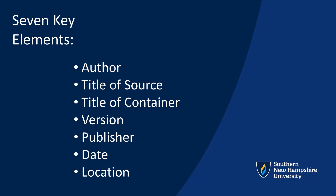Next, you will want to include the title of the source and the title of the container. For the title of the source, you should describe what was generated by the AI tool. This may involve including information about the prompt and the title of source element if you have not done so in the text. Use the title of container element to name the AI tool, for example, ChatGPT.